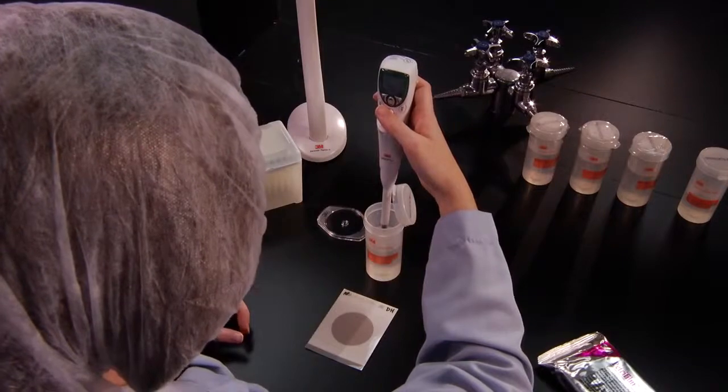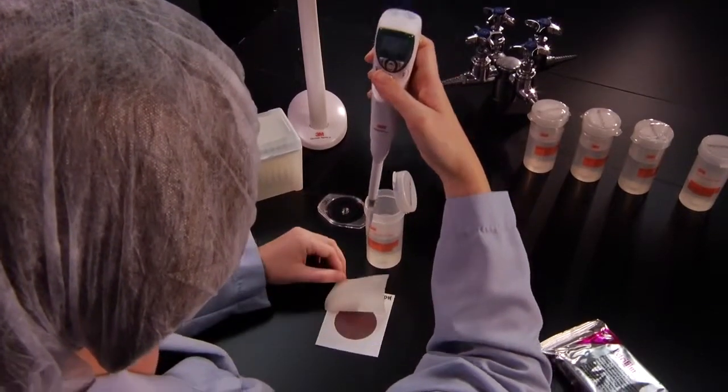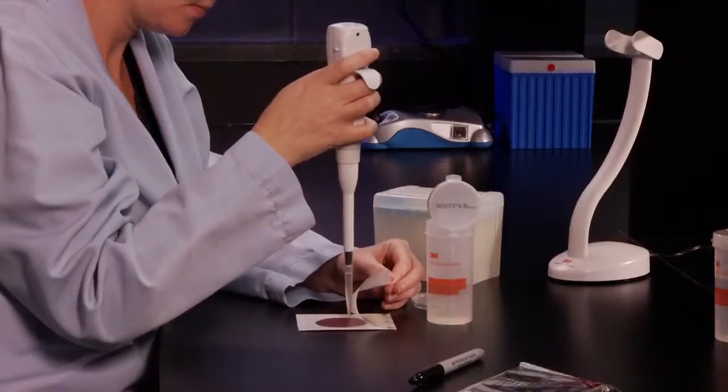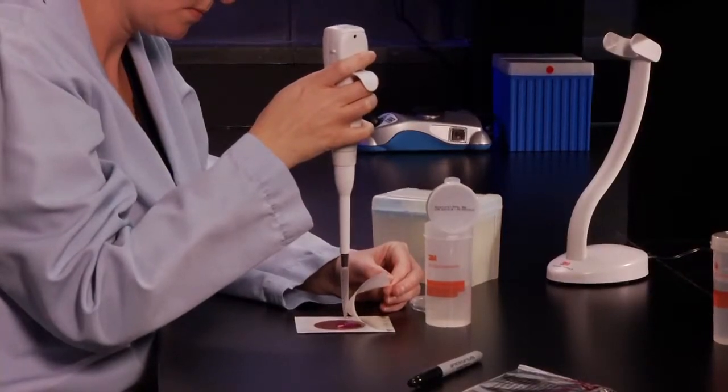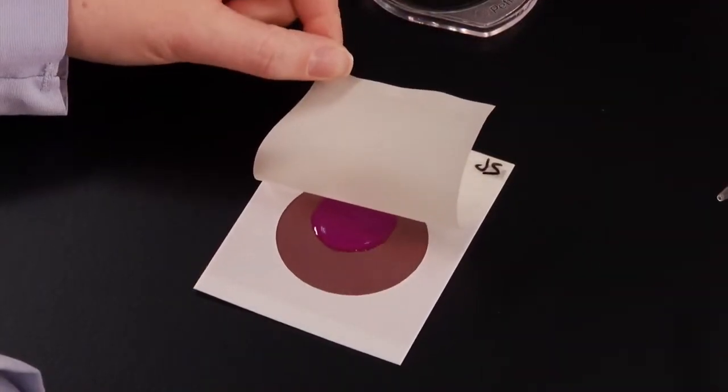Draw 1 milliliter of sample into the pipetter. Lift the top film and hold the pipetter perpendicular to the 3M PetriFilm plate. Pipet the sample onto the center of the bottom film.